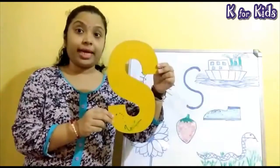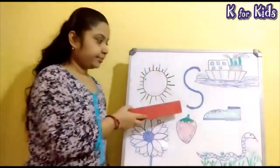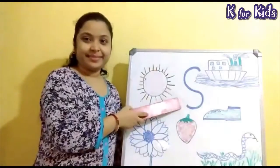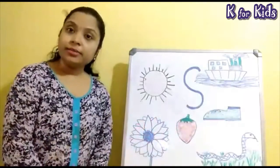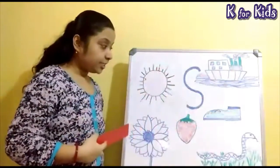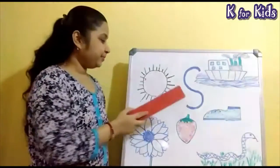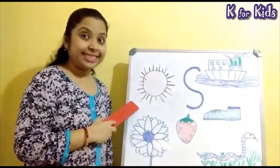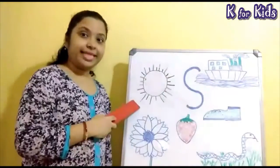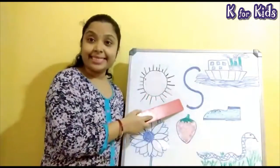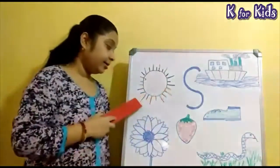Very good. Now children, look on the board. This is the alphabet S. Children, I have drawn some pictures on the board. All these pictures are related to the alphabet S. Look here — what is this? This is the Sun. Sun starts with the alphabet S. S for Sun.